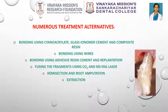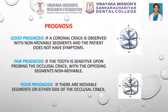Prognosis: if a coronal crack is observed with non-movable segments and the patient does not have symptoms, the tooth has a good prognosis. If the tooth is sensitive upon probing the occlusal crack with the opposing segments non-movable, then the prognosis is more guarded. If there are movable segments on either side of the crack, then the prognosis is poor.